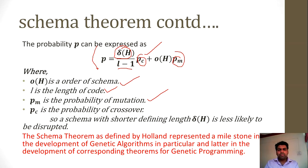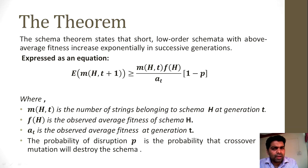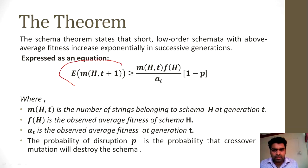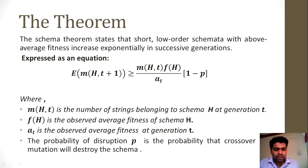The schema theorem as defined by Holland represents a milestone in the development of genetic algorithms, and later in the development of corresponding theorems for genetic programming. The schema theorem is a great tool to understand how GA operates. It says that short, low-order schemata with a fitness function above average will exponentially grow in successive generations, and we can express this growth through the inequality.